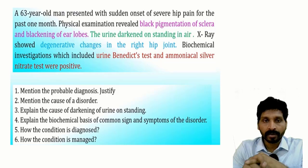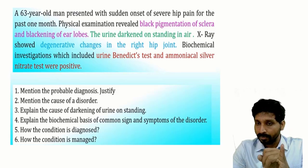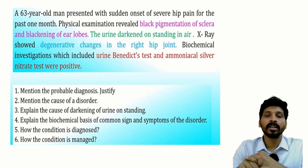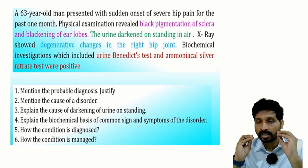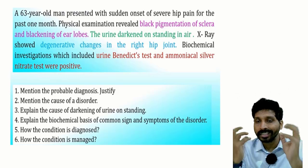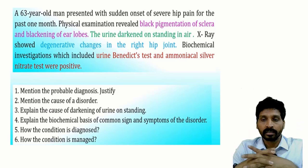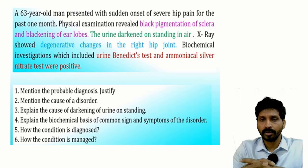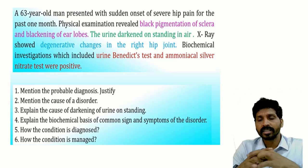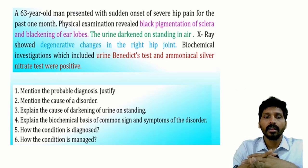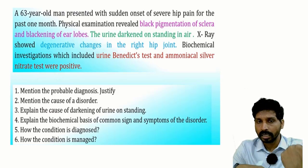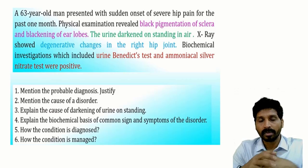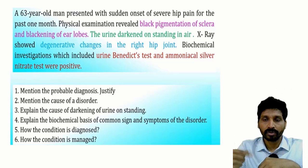Look for the keywords: this is an old man with severe hip pain for one month — bone-related disease is expected. Physical examination shows black pigmentation of soft tissues like sclera and ear lobes, meaning something is depositing in the soft tissues. The urine, after standing in air, turns dark — normally urine is pale yellow. The Benedict test is positive, but we should know Benedict test is for reducing substances, not just reducing sugars. So nothing here is directly related to diabetes — we must think beyond that.